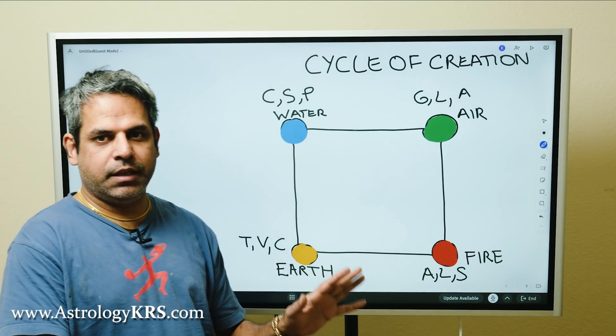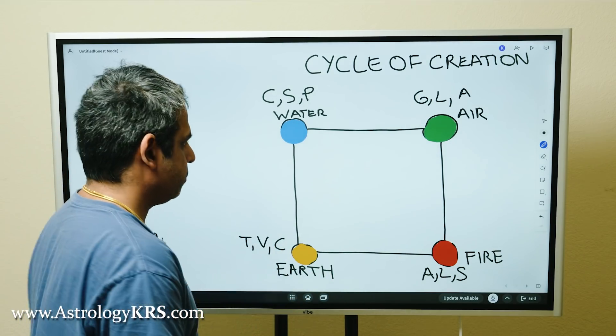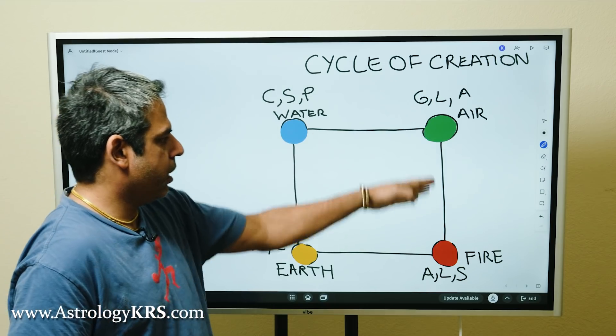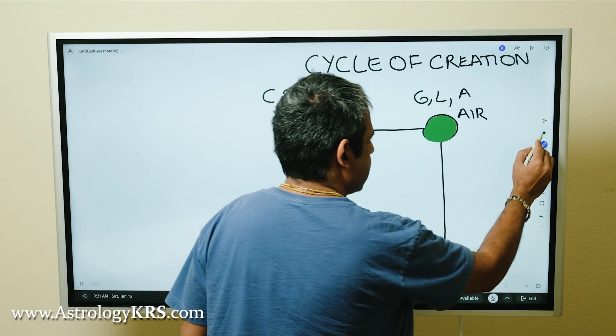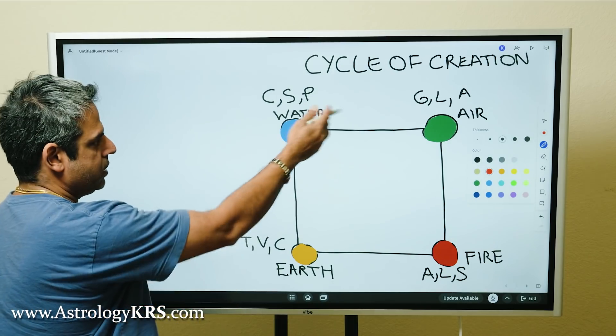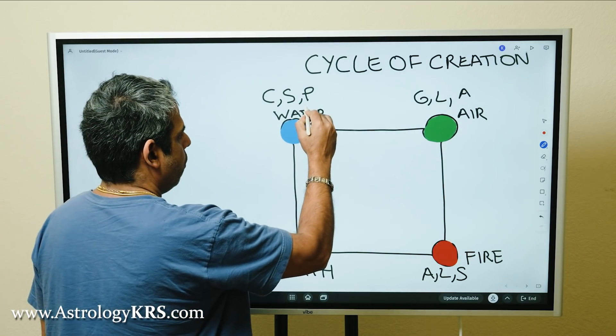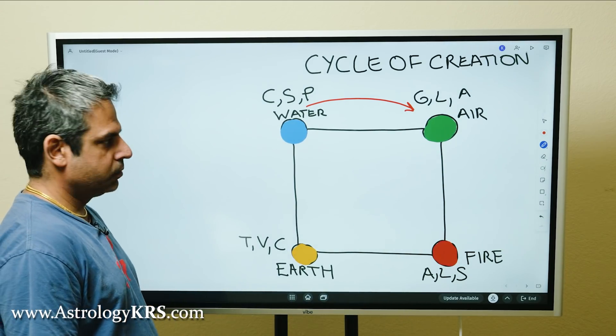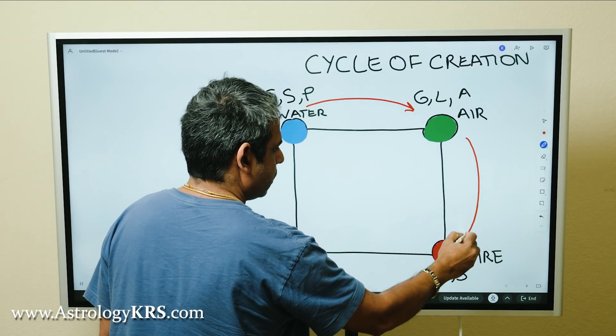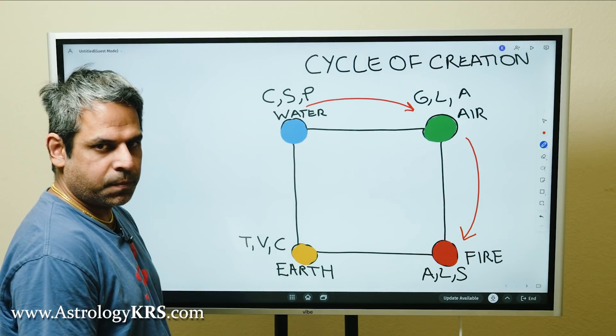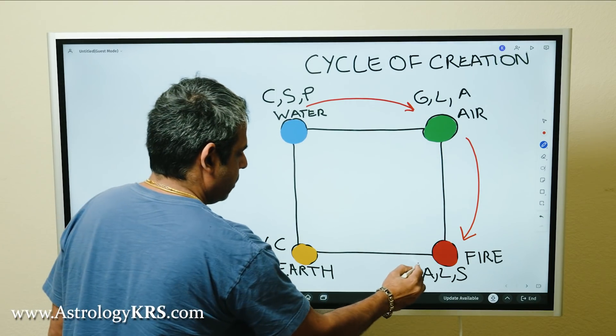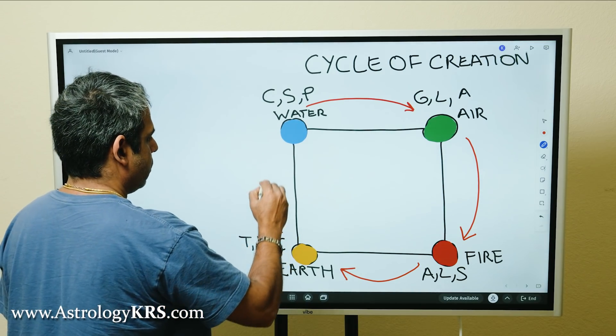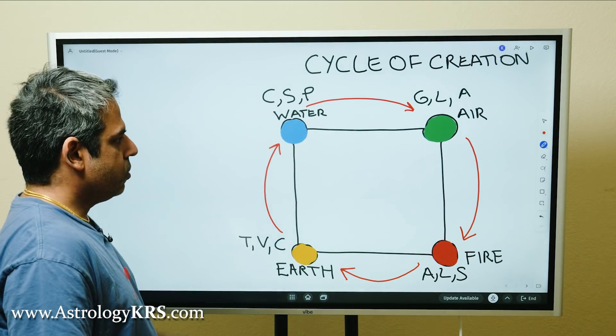One thing you should understand in the cycle of creation is you can start at any point. For example, if I start from water, water creates air, air creates fire, fire creates earth, and earth creates water. So this is the cycle of creation.